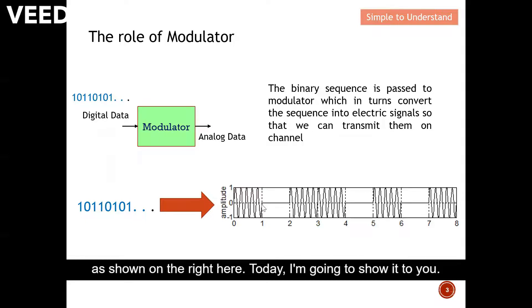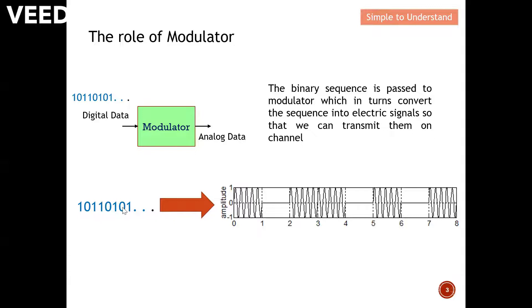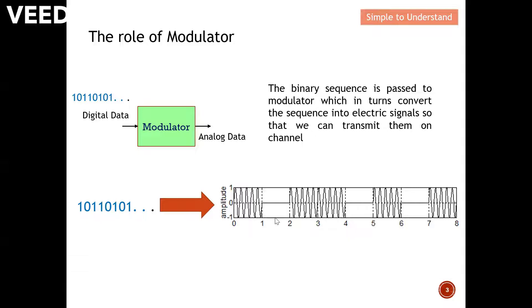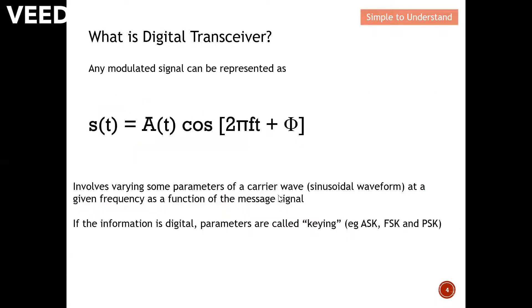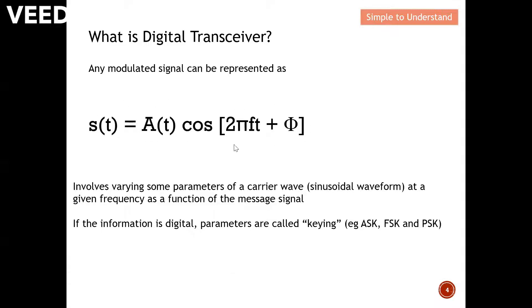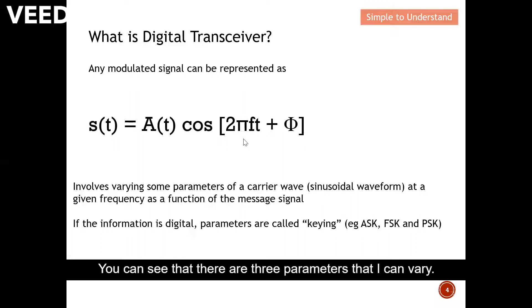Today, I'm going to show you there are three possible ways to convert the digital data into analog data. So any signal can be represented by this equation here. So you can see that there are three parameters that I can vary.